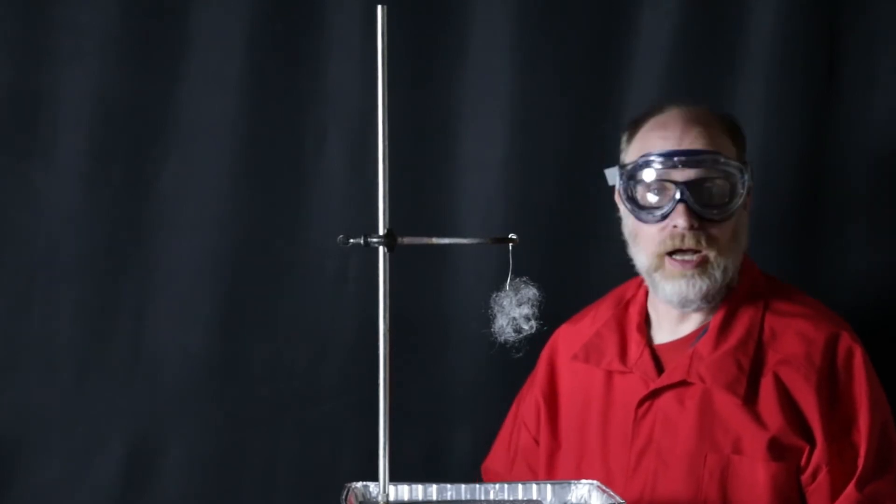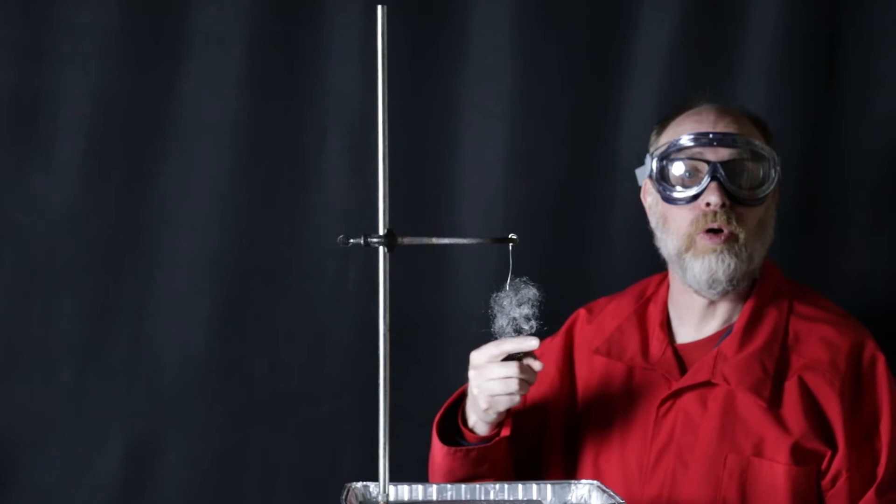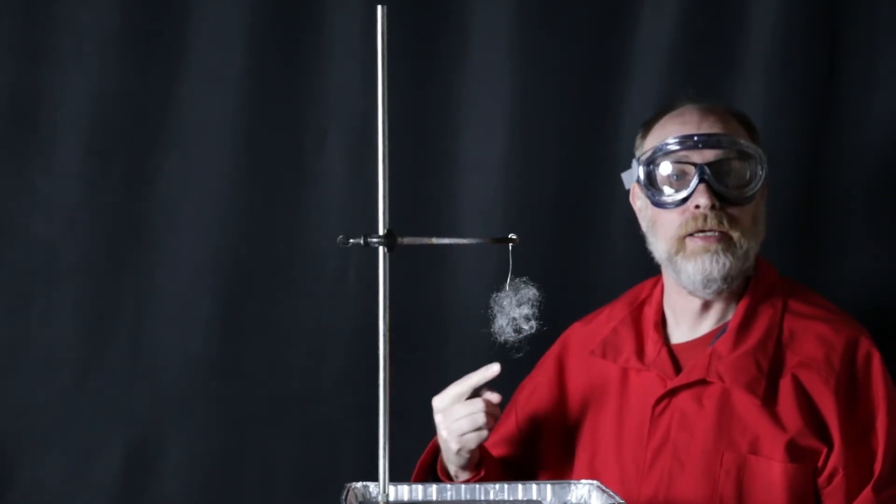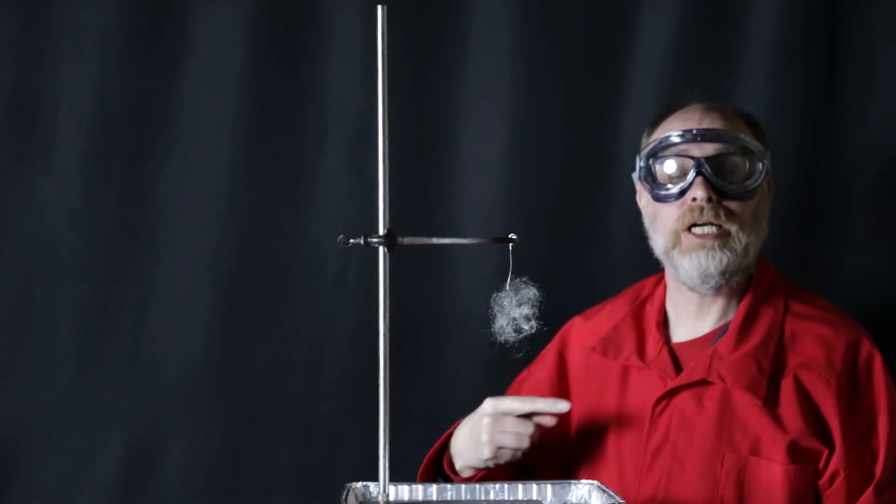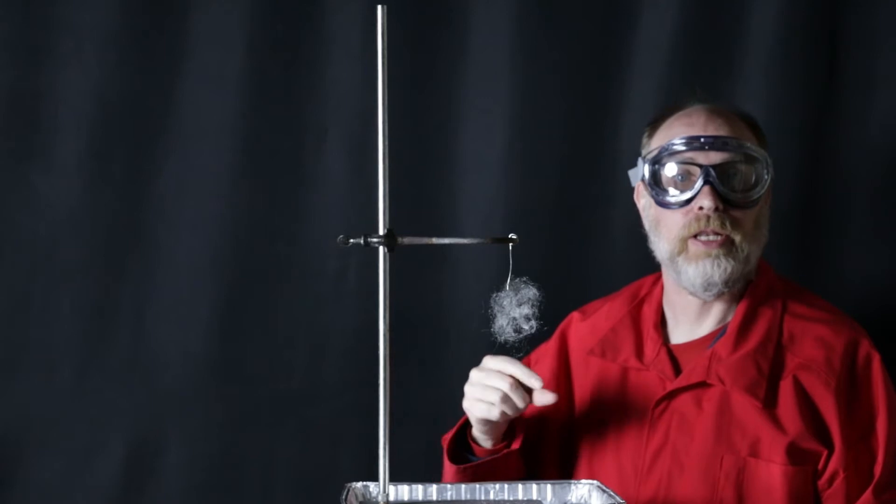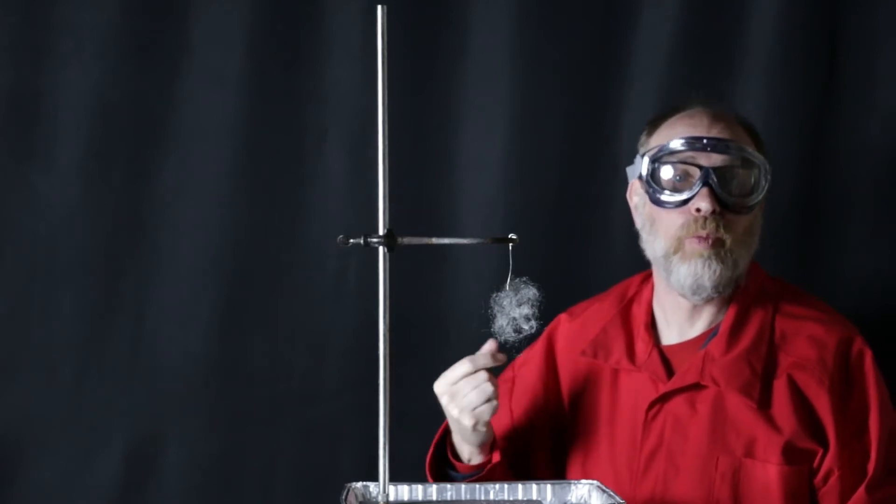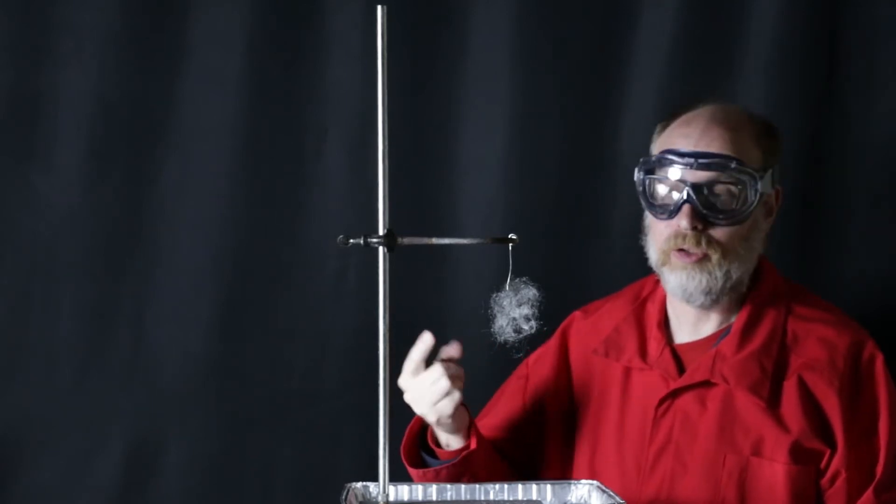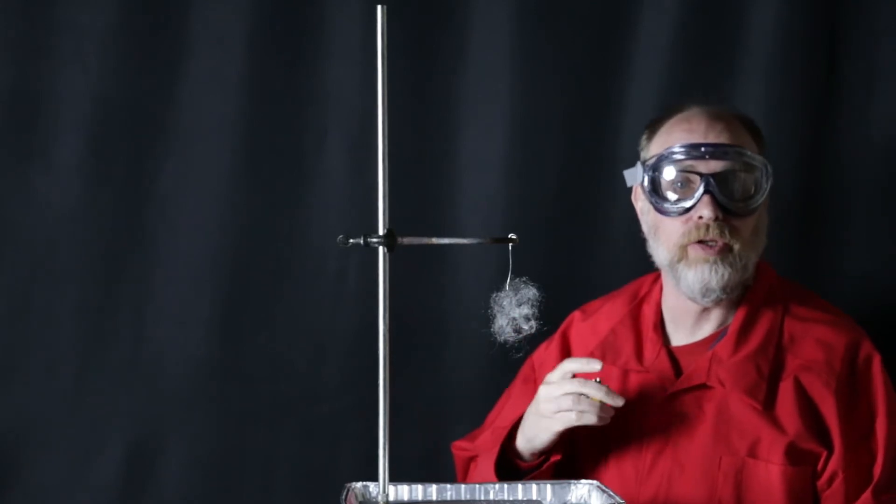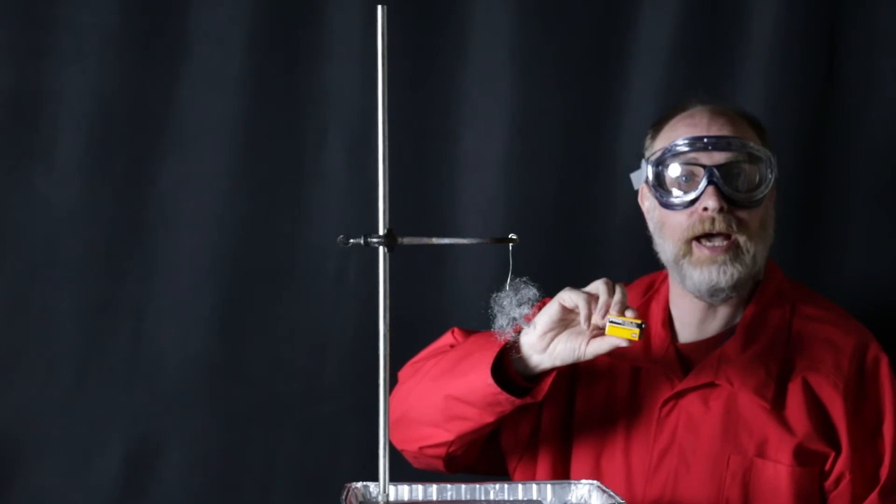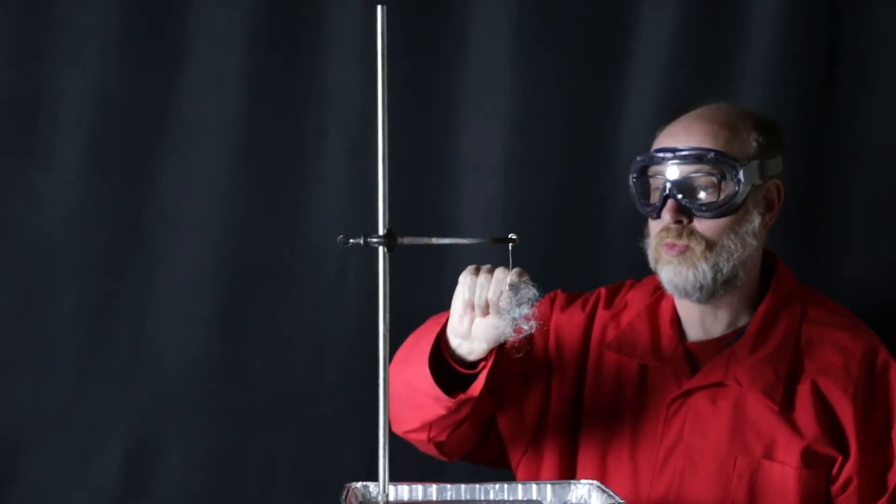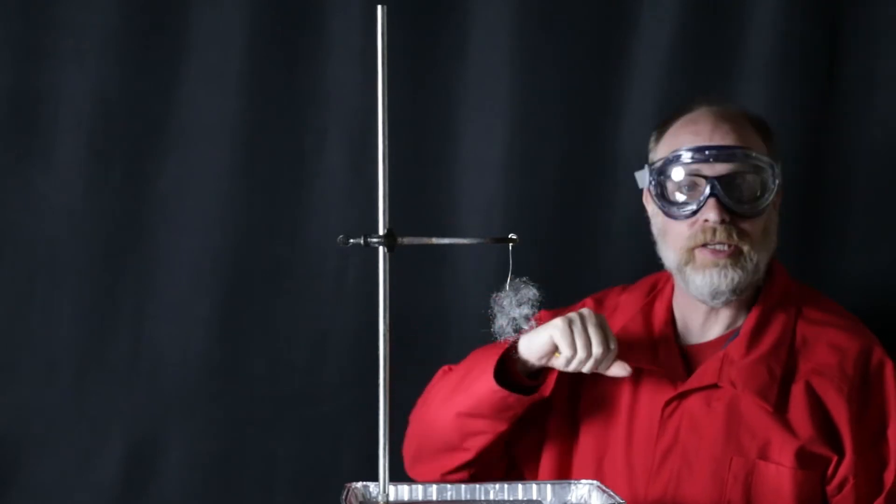So we're going to provide a lot of energy to the steel wool, and we're going to do that not in the traditional way that you would think. The traditional way would be to heat it up with a flame. That's one way you could likely do this experiment with a blowtorch. But I'm actually going to use electrical energy to do that. I'm going to start passing a current through these really little strands of steel that are in the steel wool.